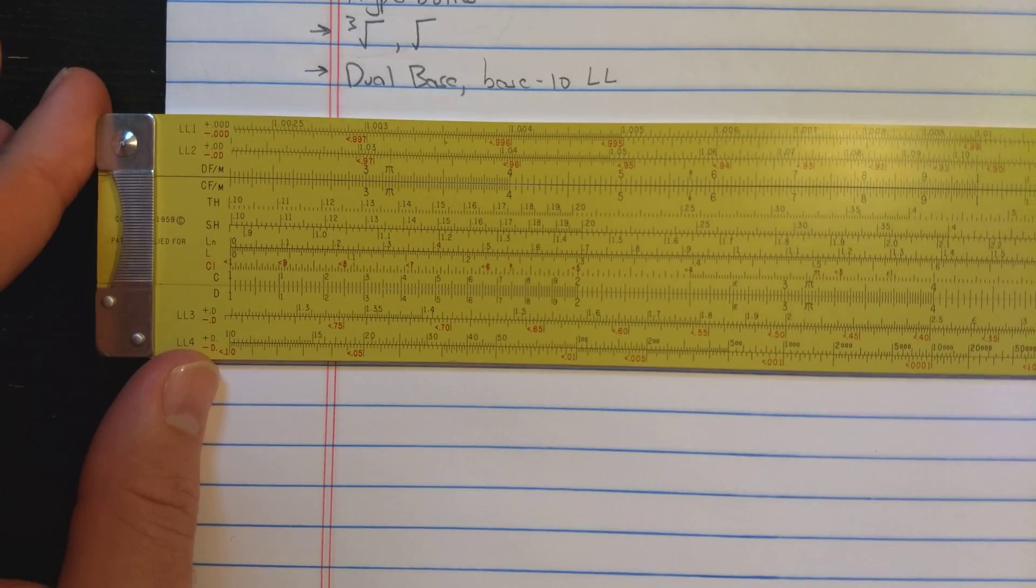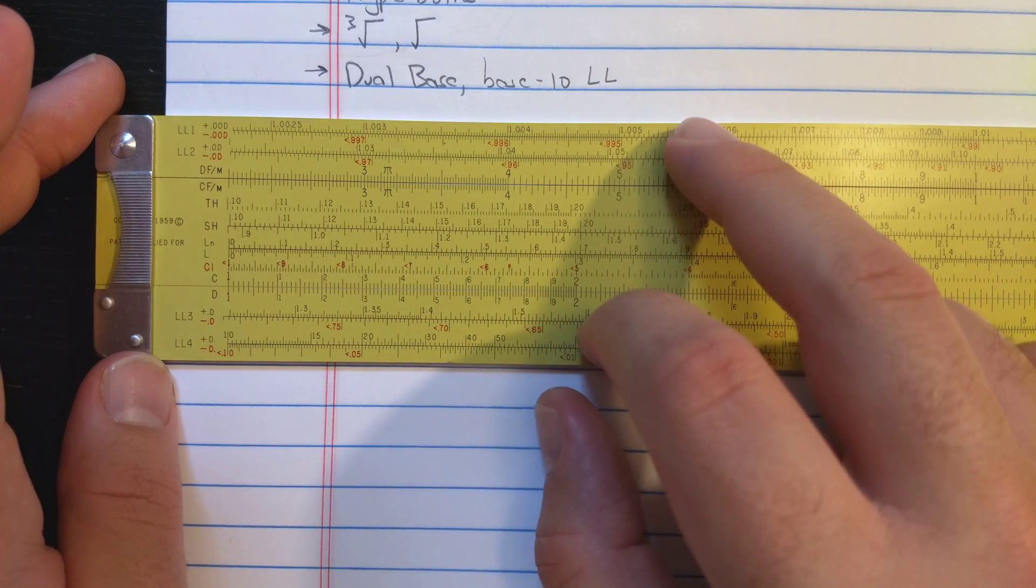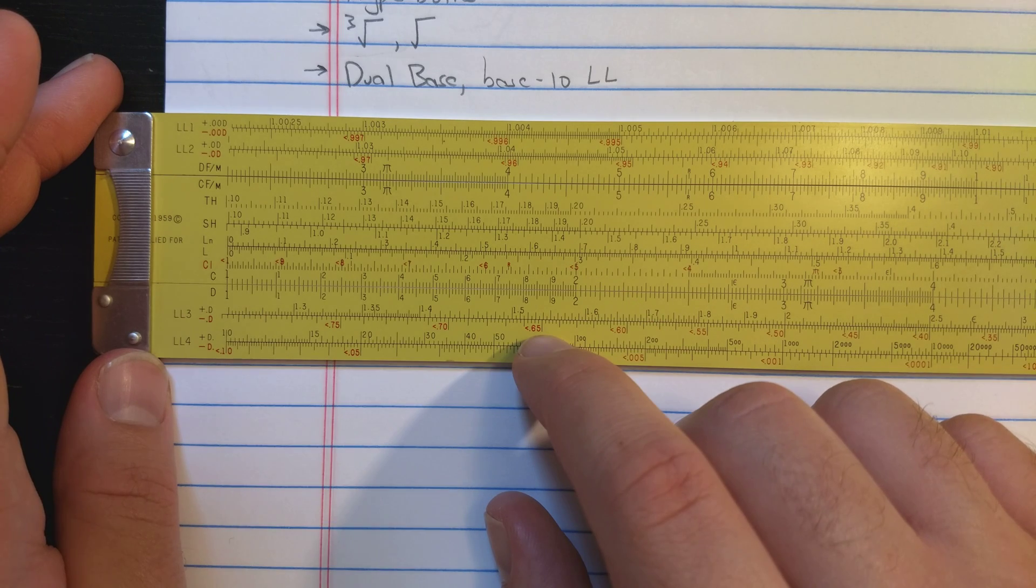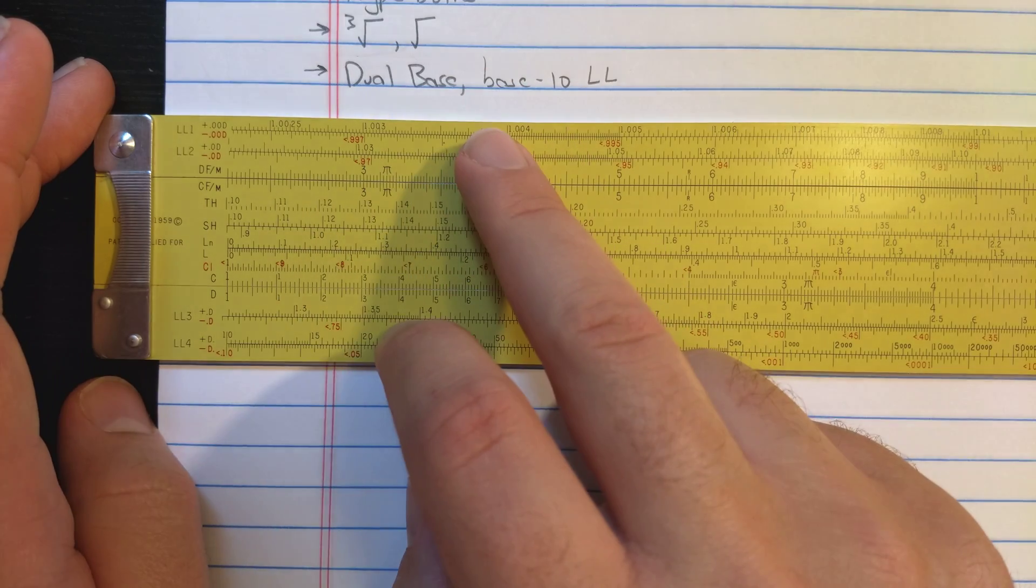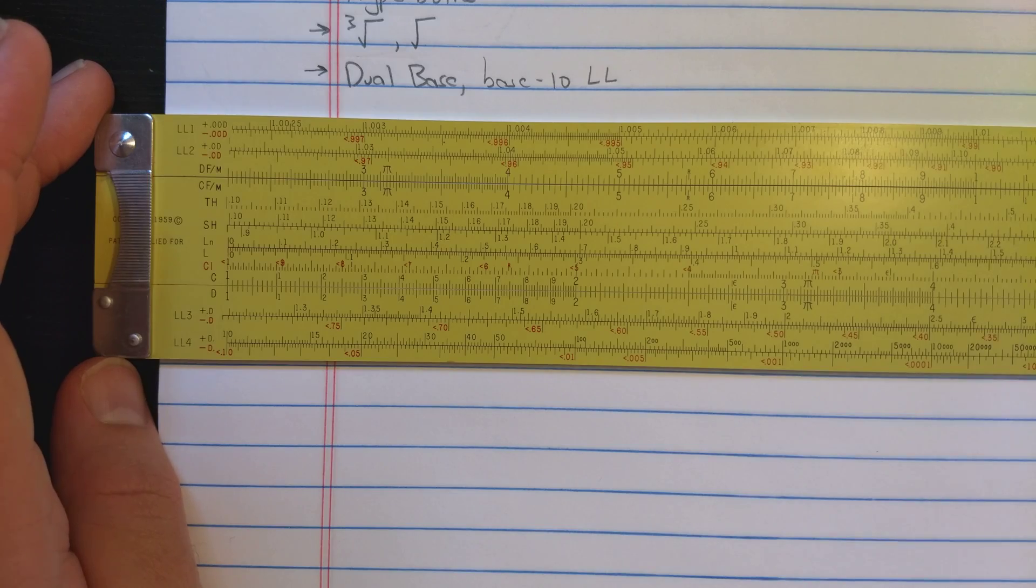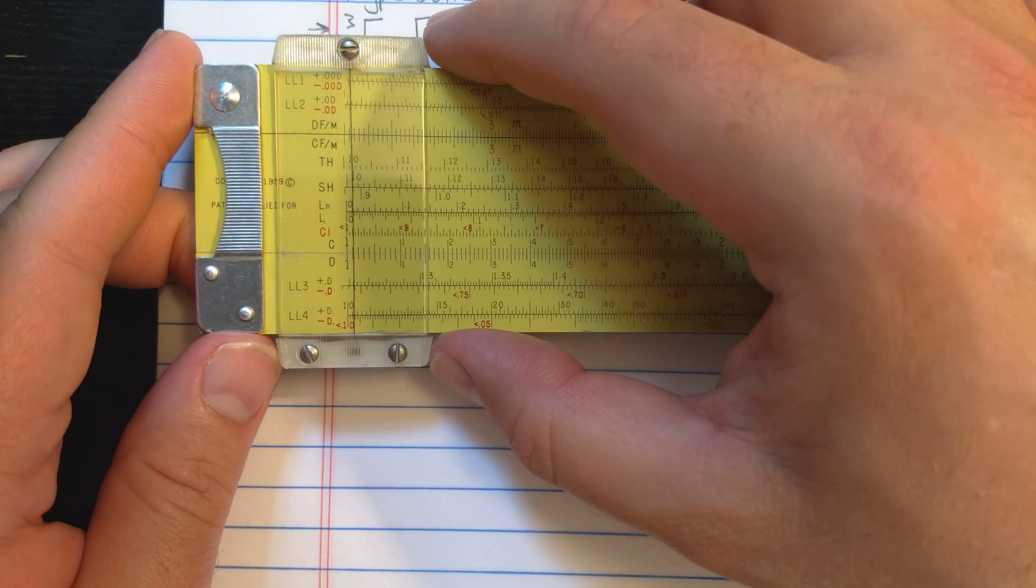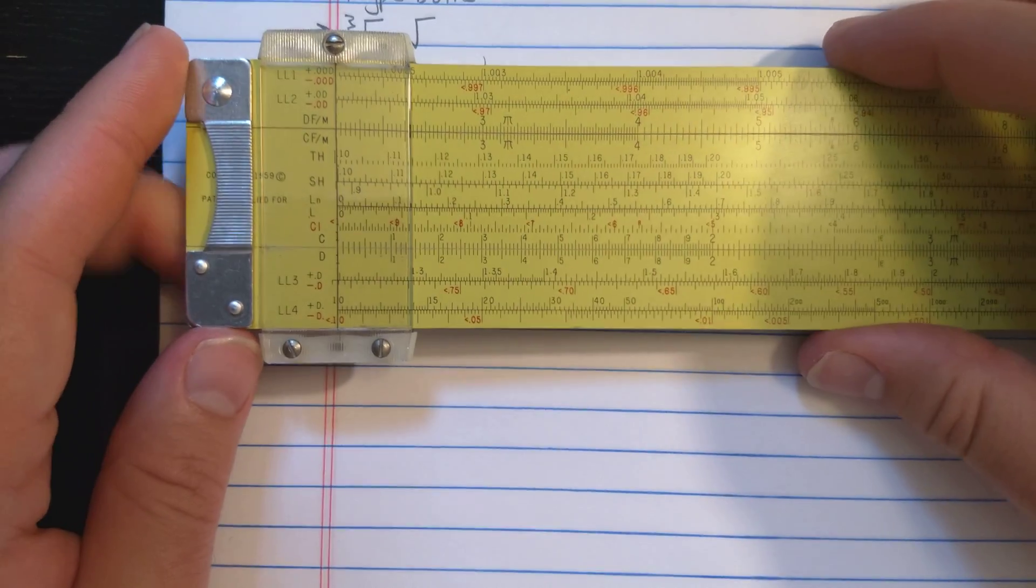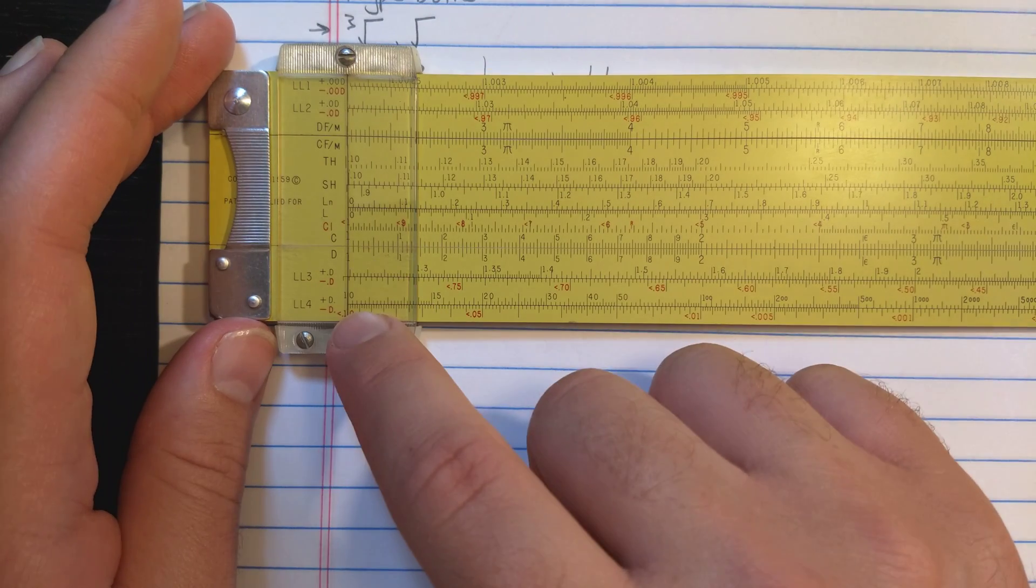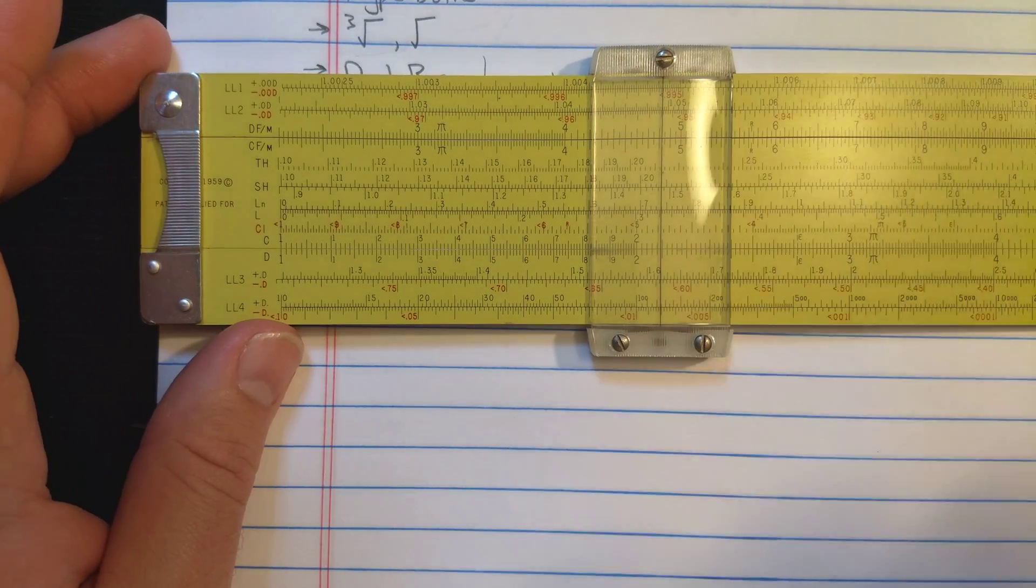So Pickett has folded the log log scales in a different way than the standard log log scales. Let's put it this way. So the regular log log scales, they're constructed by taking a base 10 log and a natural log. These log log scales are constructed by taking a base 10 log and then a base 10 log. So if you look at the ends, you see 10. You see 10 there on the last log log scale. That's because the log of 10 should be 1. And so it reads on D the base 10 log instead of the base E log. So on most slide rules, you will see E there because natural log of E should be 1. So when you set a number on the log log scales on the N4, it reads the base 10 log.